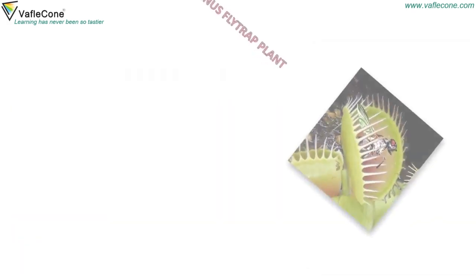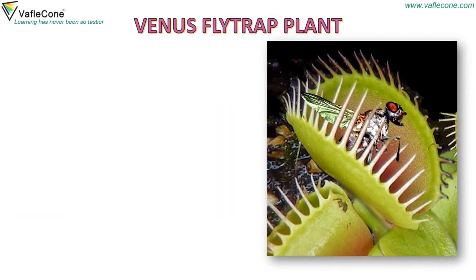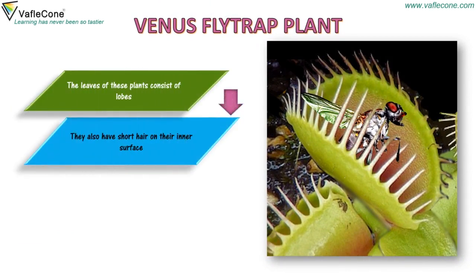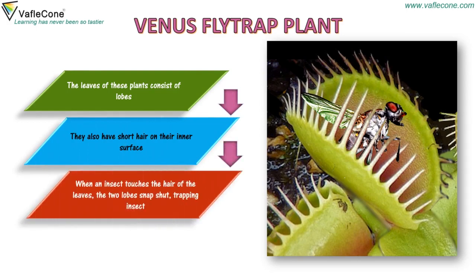The Venus flytrap plant has leaves that consist of lobes, and they also have short hair on their inner surface. When an insect touches the hair of the leaves, the two lobes snap shut, trapping the insect.